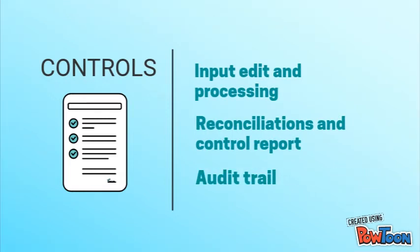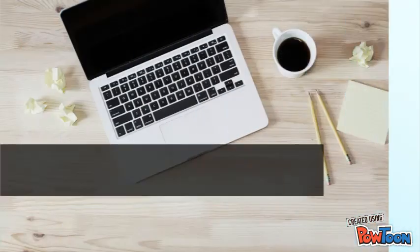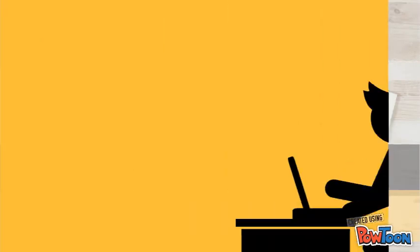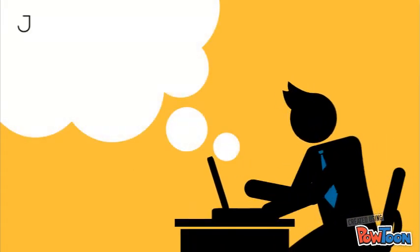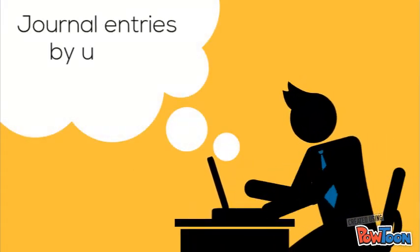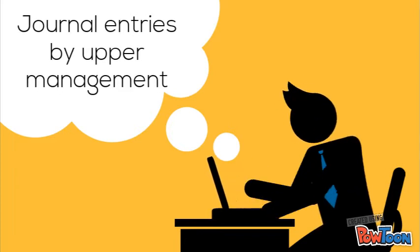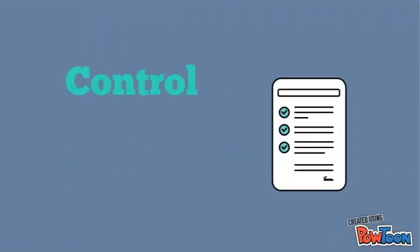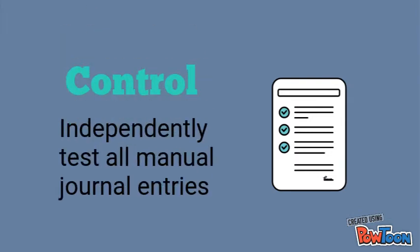These are implemented in order to double-check any errors that may have occurred. Second would be financial statement fraud, which often involves journal entries by upper-level management that either overstates revenues or understates liabilities. A control for this threat would be independent testing of all manual journal entries to the general ledger.